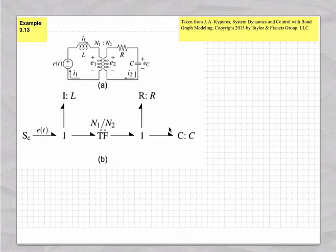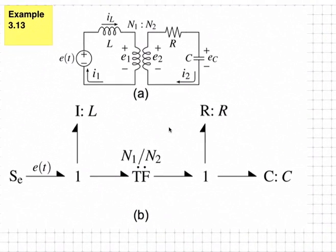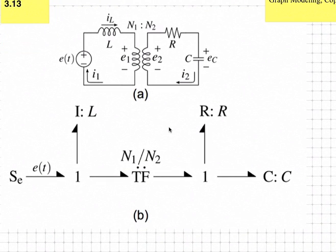Rule 3.13, we're going to derive the differential equations. We'll begin by applying causality. There is one effort source. So if we apply causality to the effort source, we will get effort into a one junction.